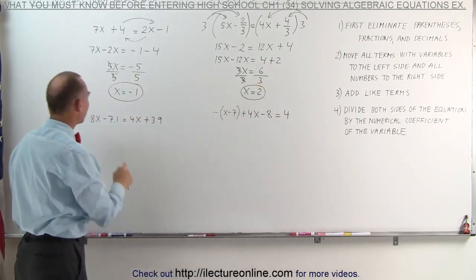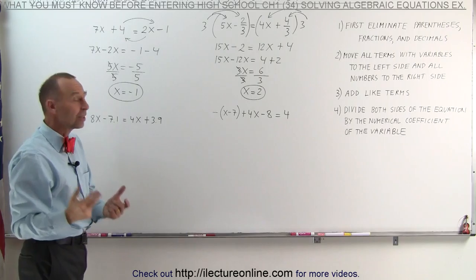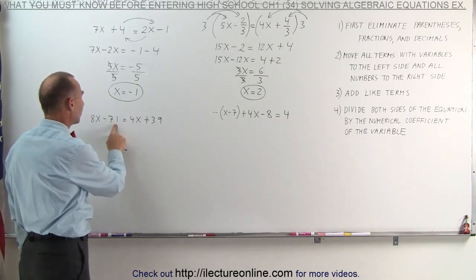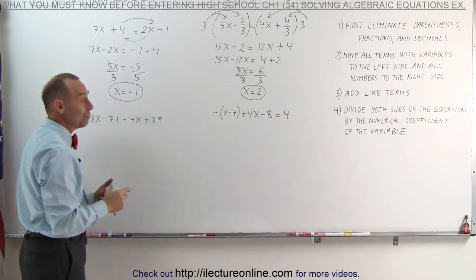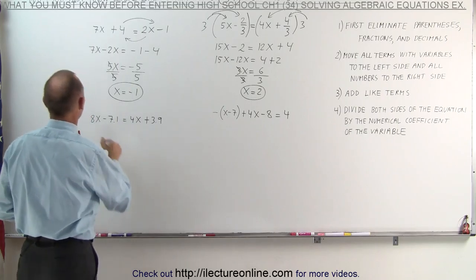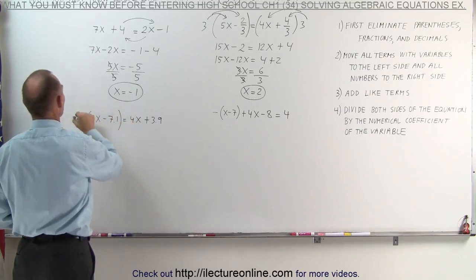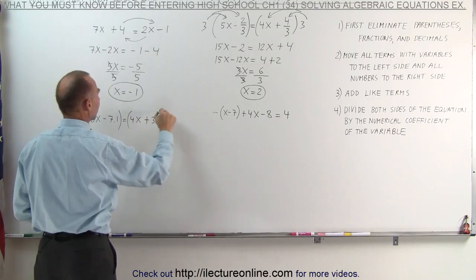On our third example, notice we have decimals. We want to get rid of the decimals. We have one decimal place here, one decimal place there, which means we need to multiply both sides of the equation by the number 10 to get rid of a single decimal place.